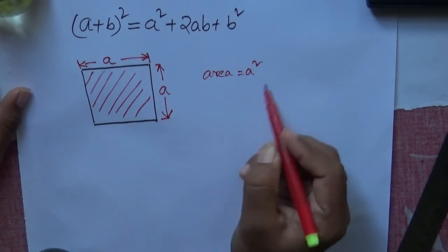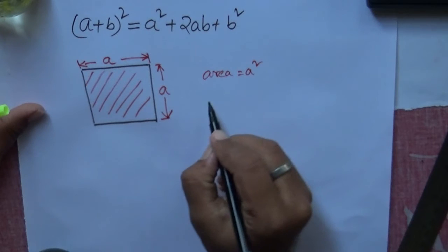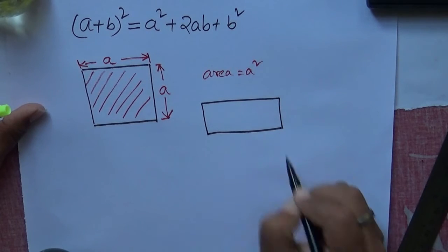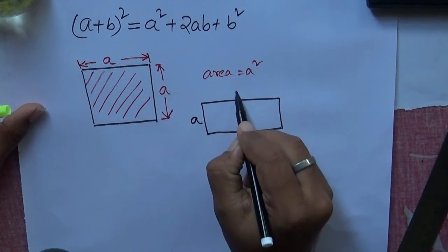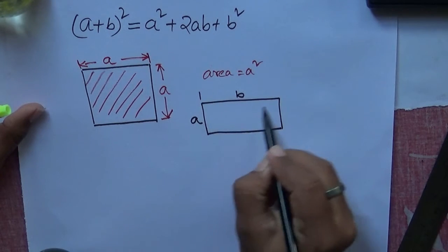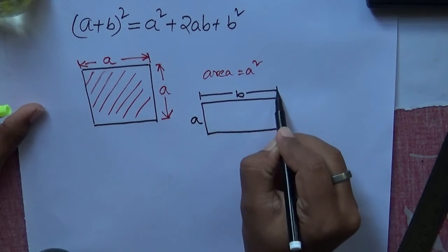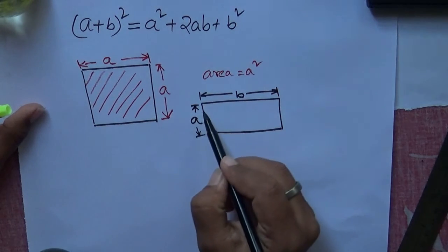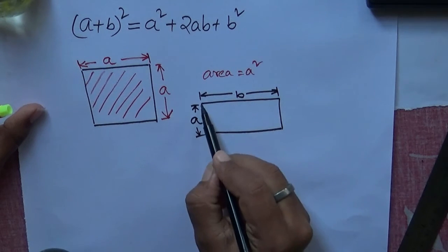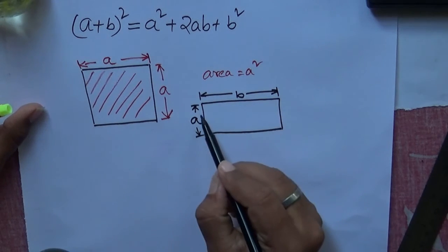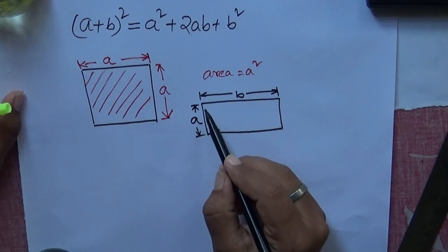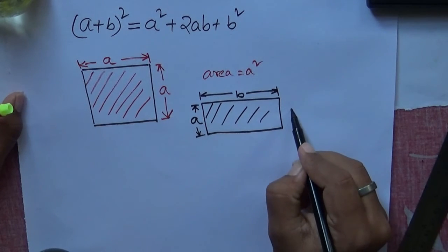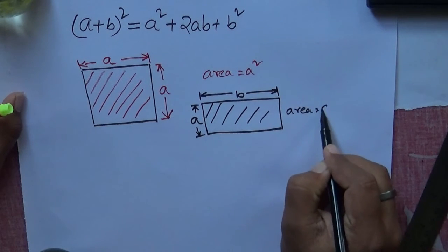Now in the case of a rectangular shape, if one edge is 'a' and the other edge is 'b' — suppose the length is 'b' and the width is 'a' — then the area is a × b, which equals ab.